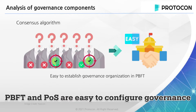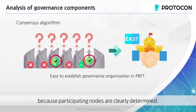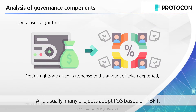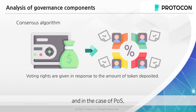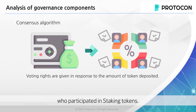On the other hand, in the case of PBFT algorithms, nodes with voting rights can be clearly specified because participating nodes are clearly determined. That's why PBFT is an easy environment to establish a governance organization. Usually, many projects adopt POS based on PBFT. And in the case of POS, token governance can be constructed around participants who participated in staking tokens.